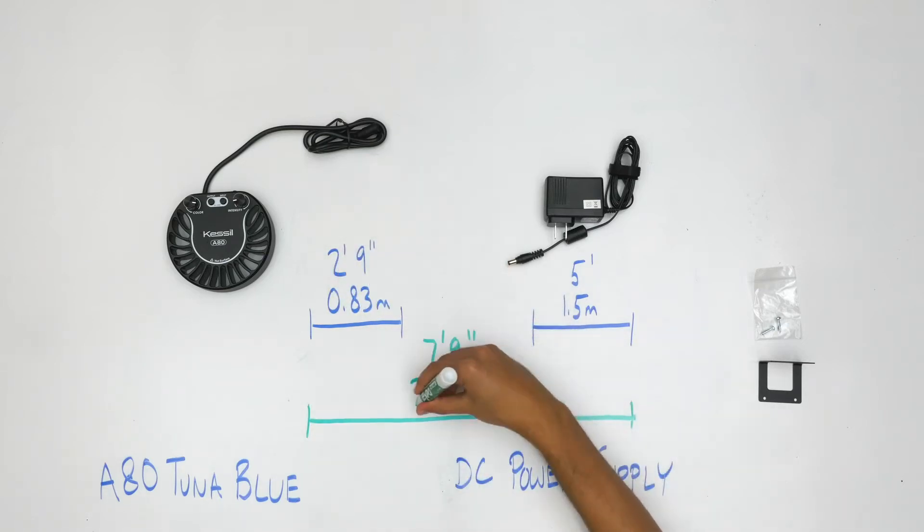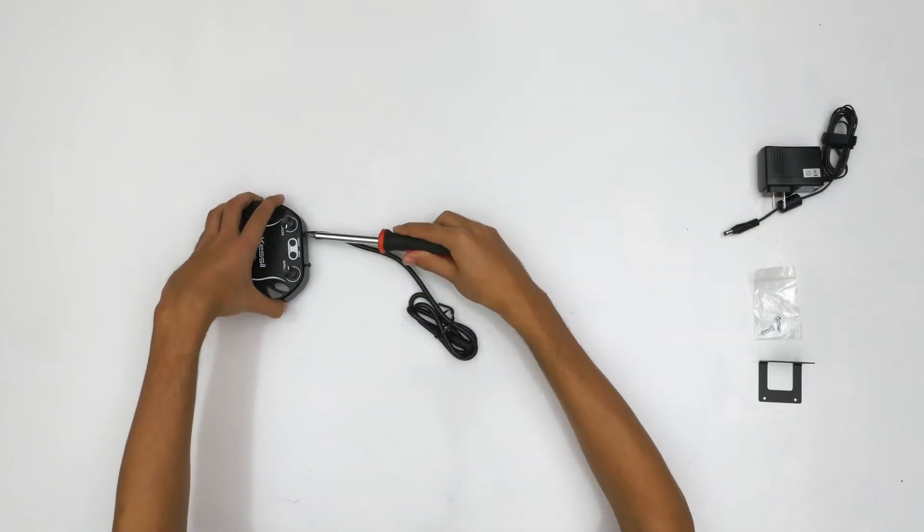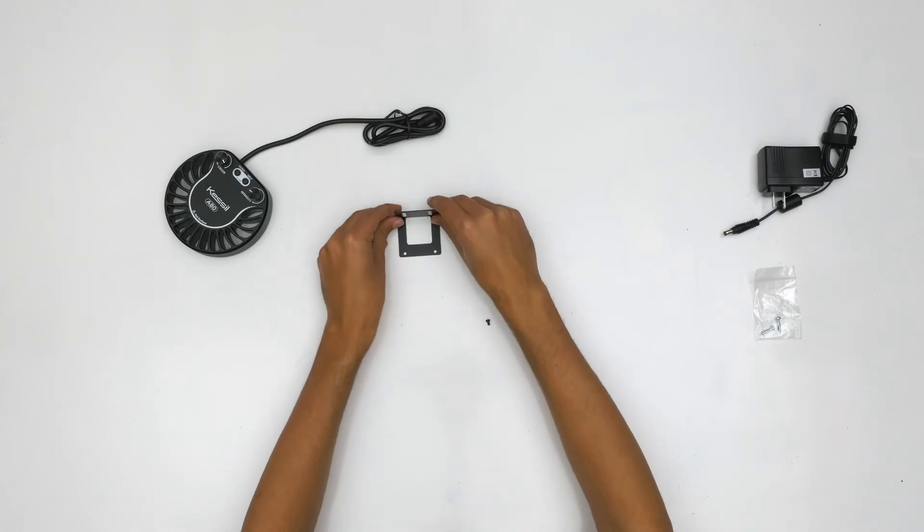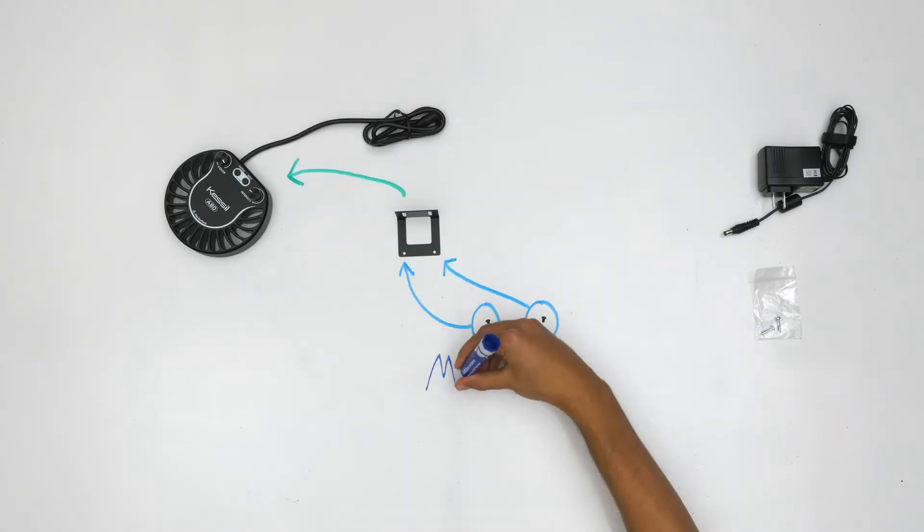The screws and corresponding threads that attach the mounting adapter to the A80 Tuna Blue are Phillips size M3 by 5 millimeters. The 5 millimeter refers to the length of the thread only, not including the head. These are the recommended screw sizes for this fixture, so be careful using anything longer than what comes in the box, as it could cause damage to the light.